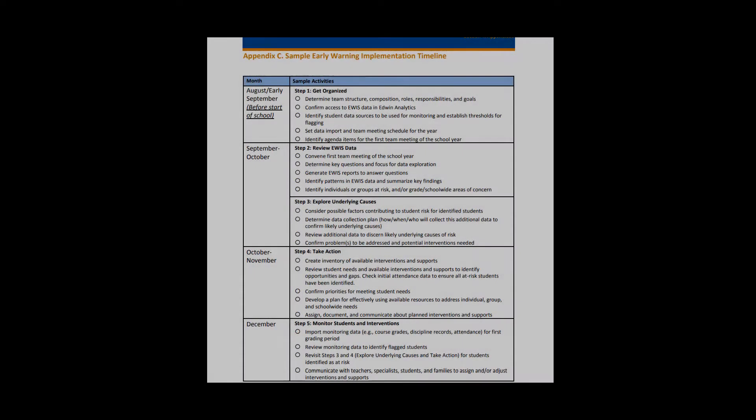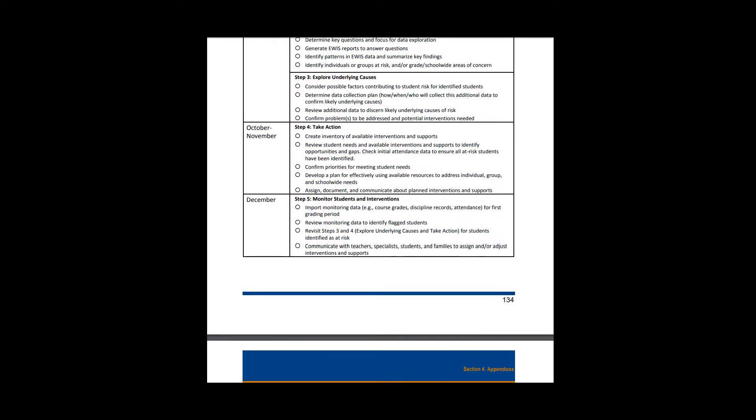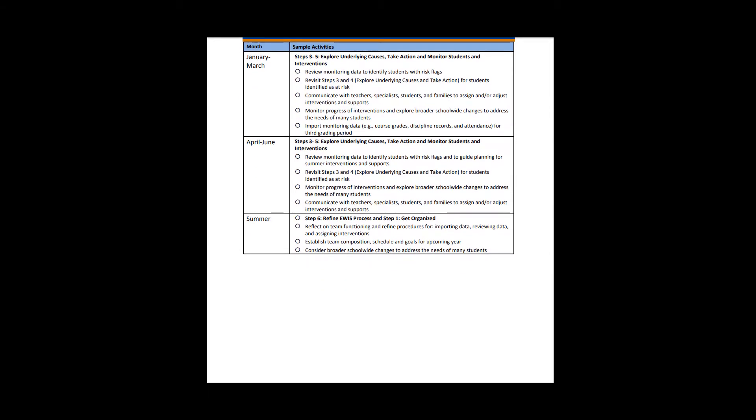At each marking period, or whatever frequency is right for your context, generate up-to-date information. Examine the data two, three, or four times a year to identify students if they begin to go off track. Catching changes in student risk right away, understanding underlying causes, and creating appropriate programmatic supports or systemic changes can bring students back on track quickly.